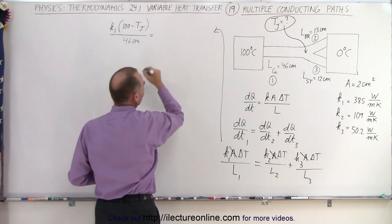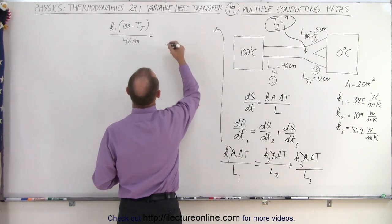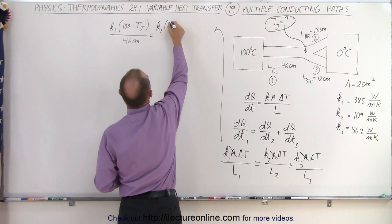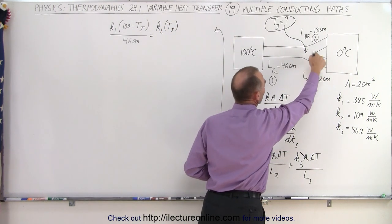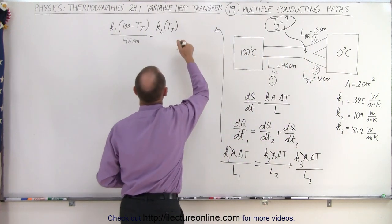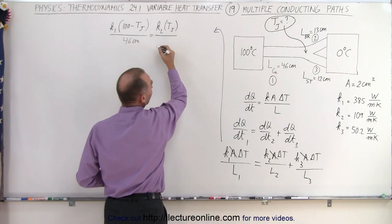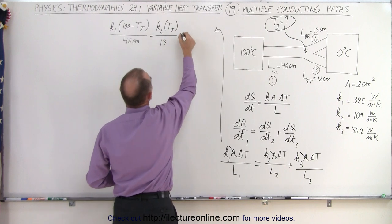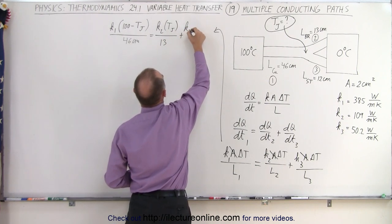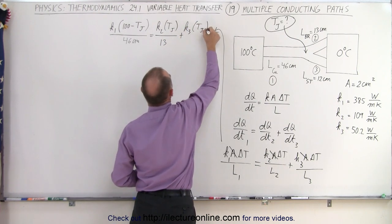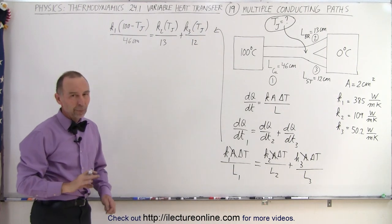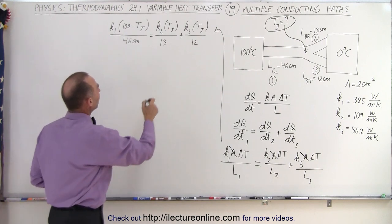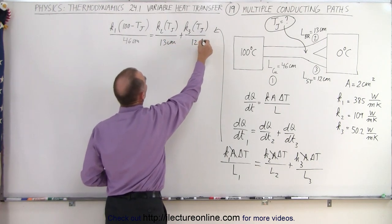This equals the sum of the two on the right side: K2 times the junction temperature divided by the length, which is 13, plus K3 times the junction temperature divided by 12. Again, we can use centimeters because the units cancel out on both sides.